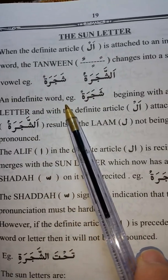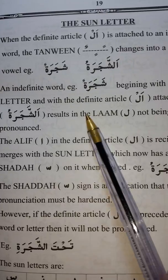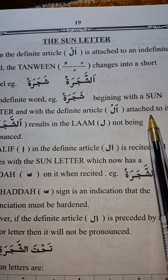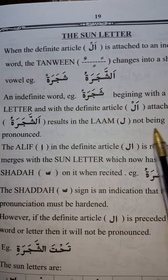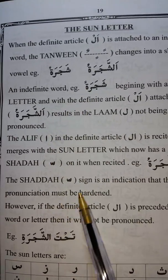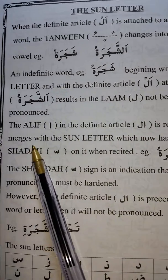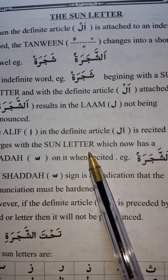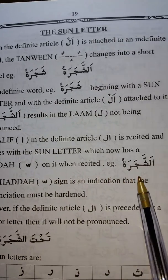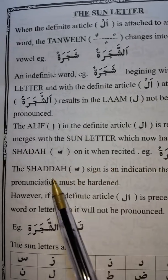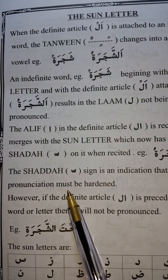An indefinite word, for example Sajaratun, beginning with a sun letter — which is Alif Lam — and with the definite article Alif Lam attached to it, results in the Lam not being pronounced. That's where it becomes a sun letter. The Alif in the definite article Alif Lam is recited and merged with the sun letter, which now has a Shaddah on it when recited. Say for example, Assajaratun. The Shaddah sign is an indication that pronunciation must be hardened.